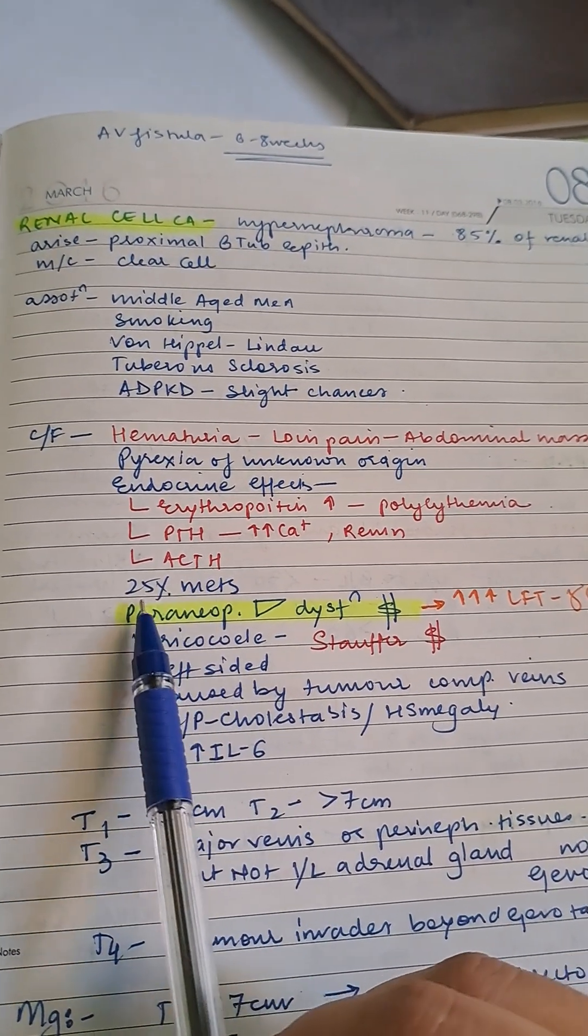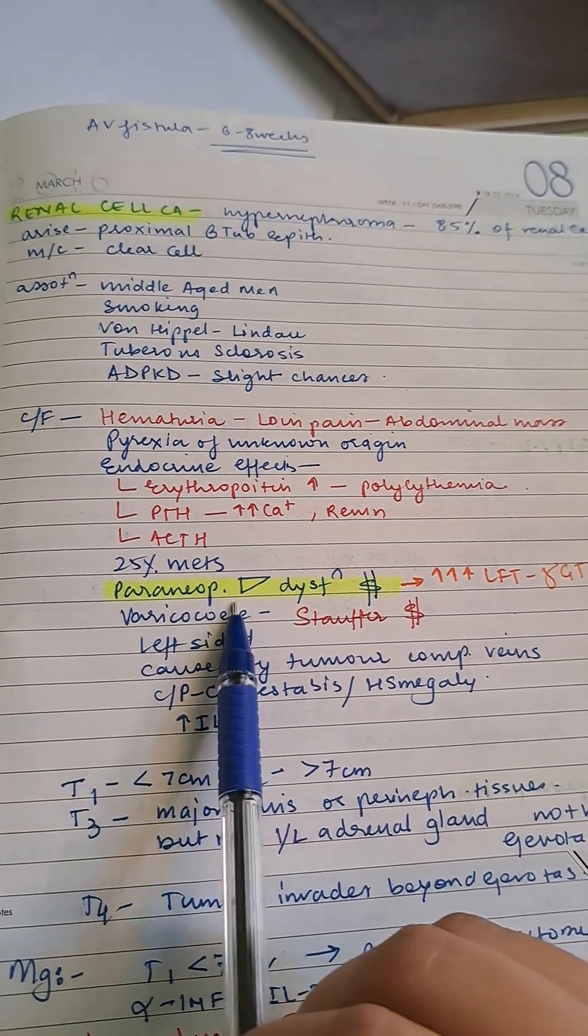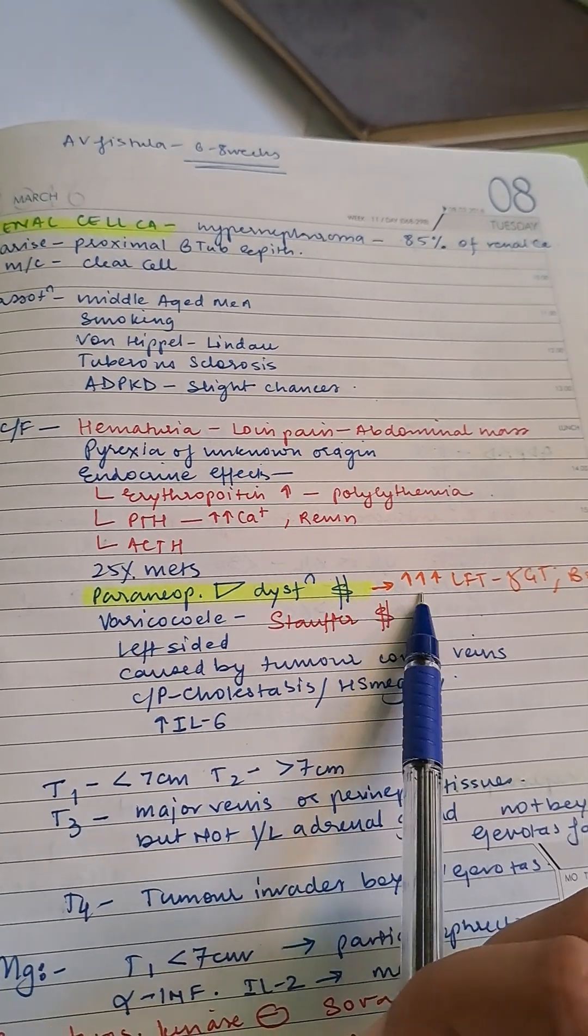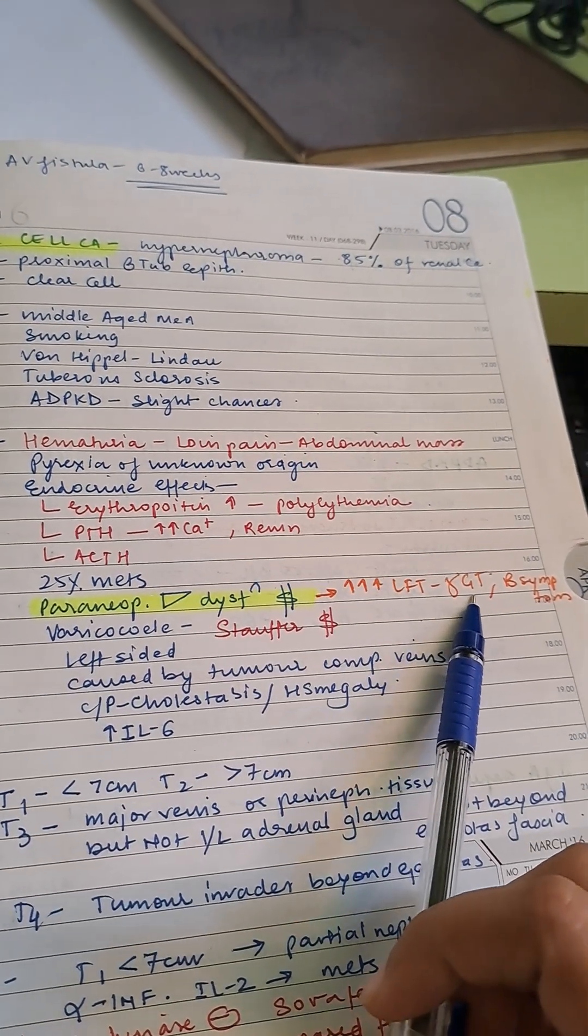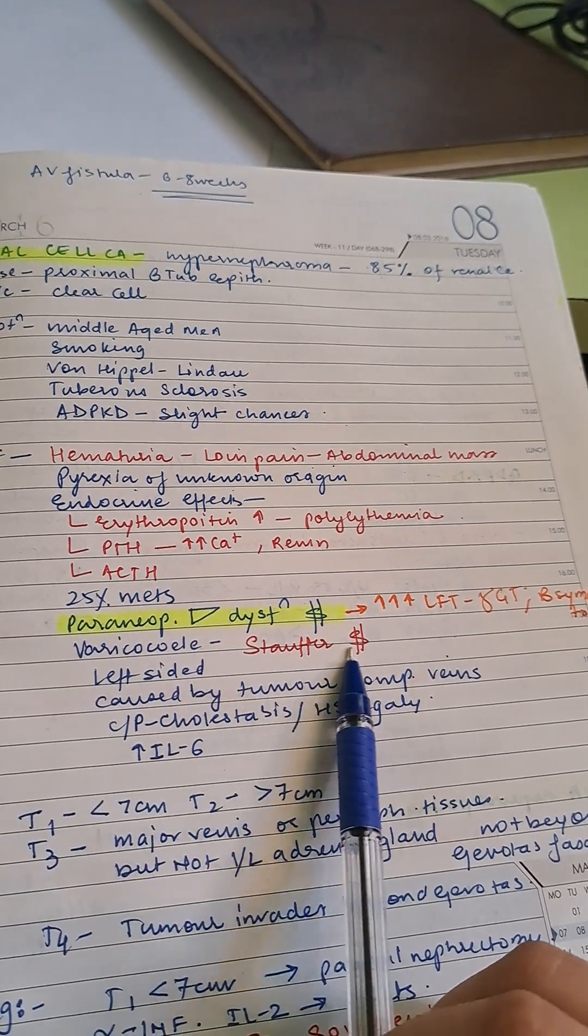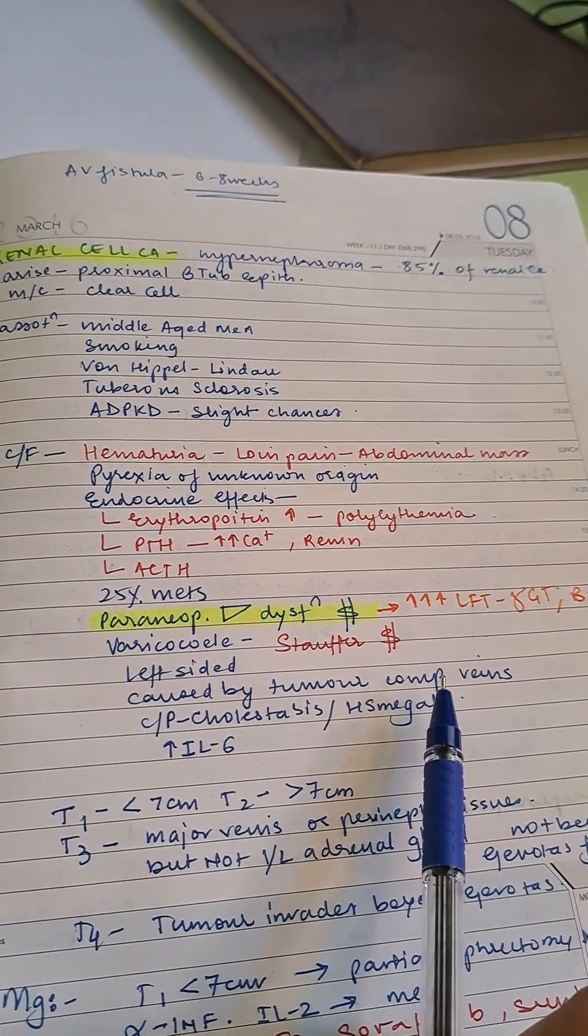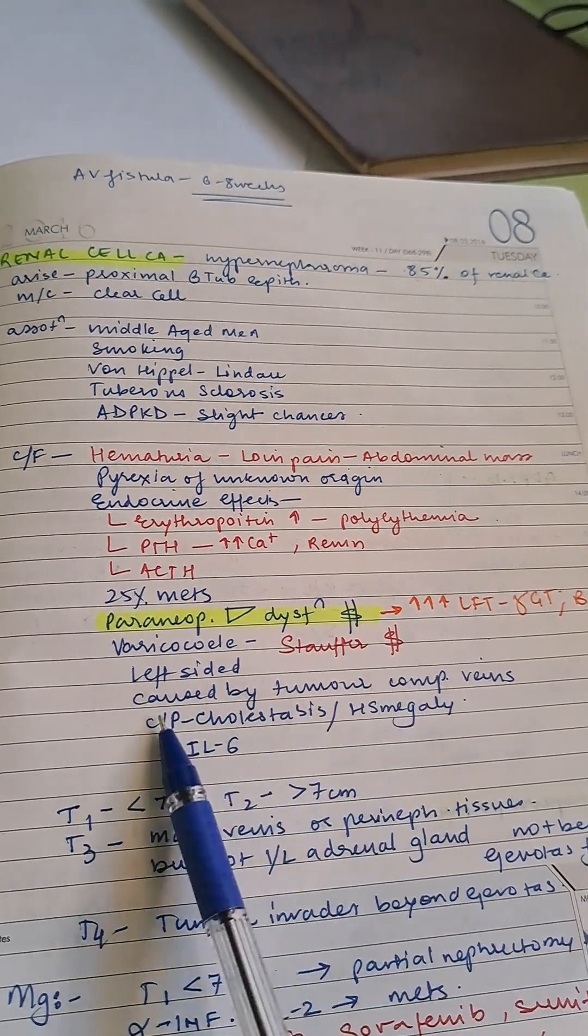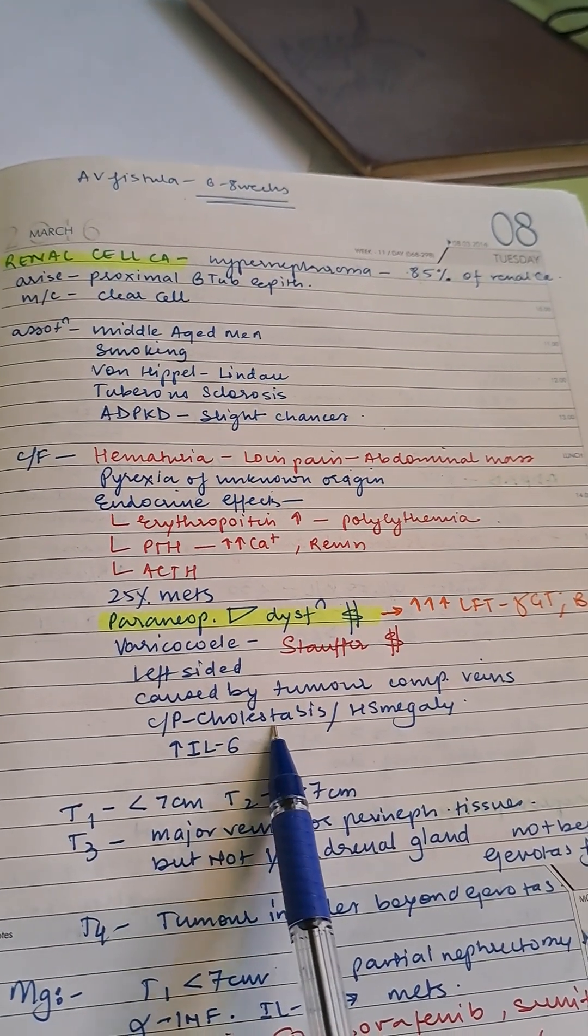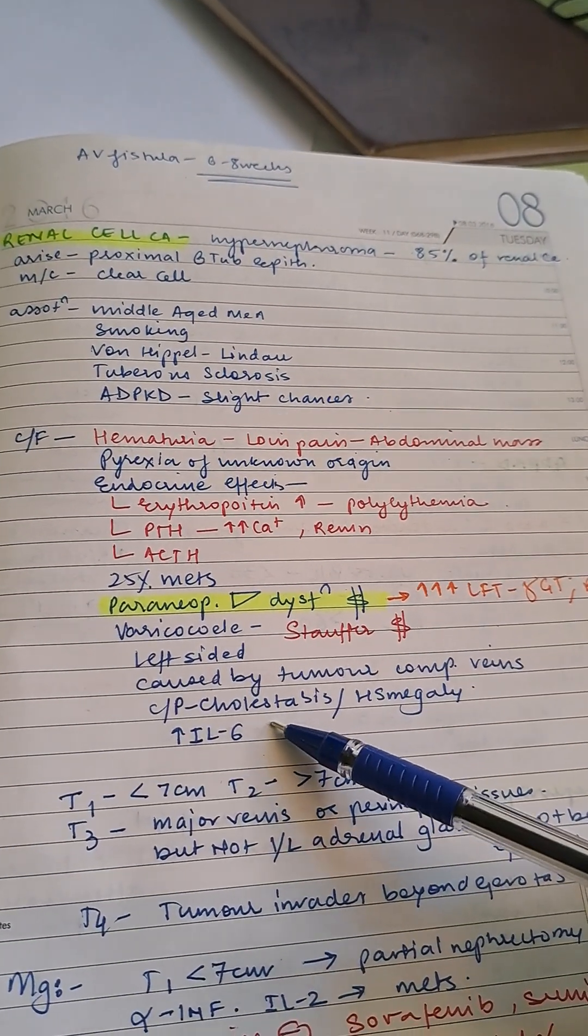25% will undergo metastasis. Paraneoplastic renal dysfunction syndrome causes increased LFT, gamma GT, and alkaline phosphatase. Varicocele—Stauffer syndrome—is left-sided, caused by tumor compromising the veins. Clinical picture is cholestasis and hepatosplenomegaly due to increased interleukin 6.